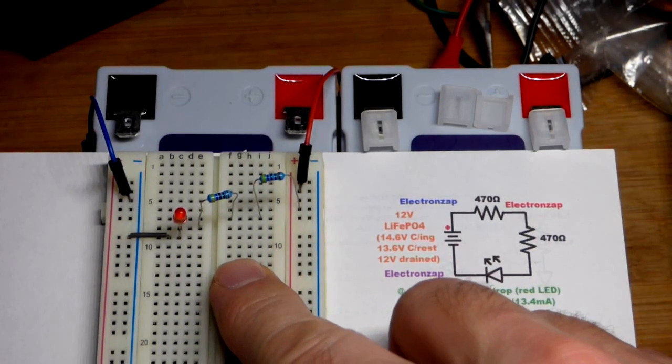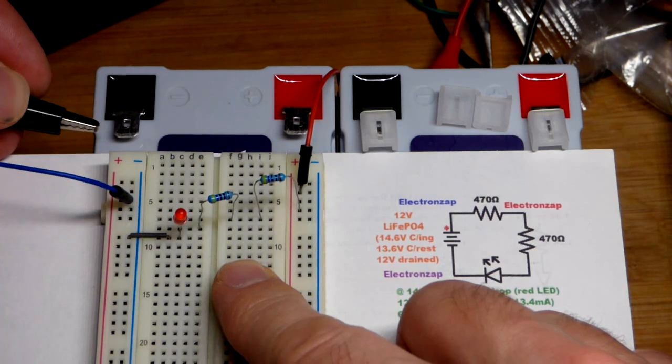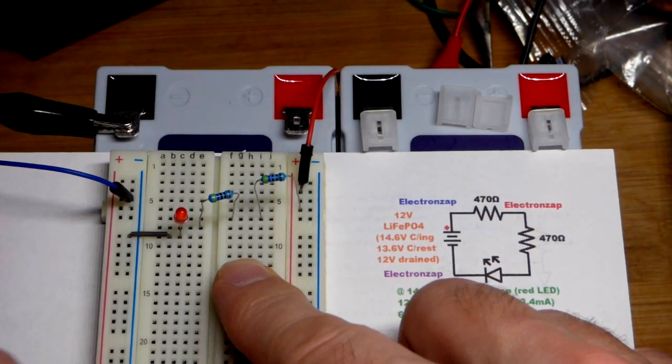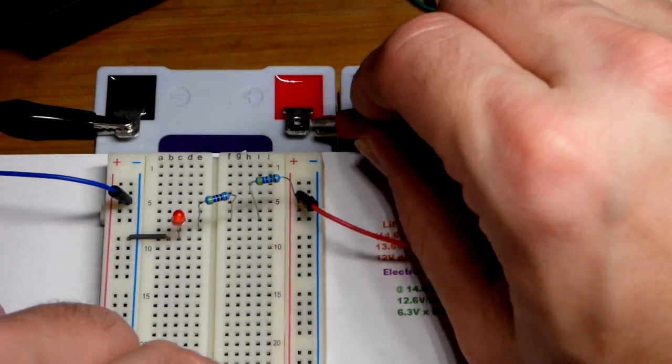So now I decided to make a video series. This is the first video where I power simple circuits with a 12 volt lithium iron phosphate battery. We're going to do that right now.